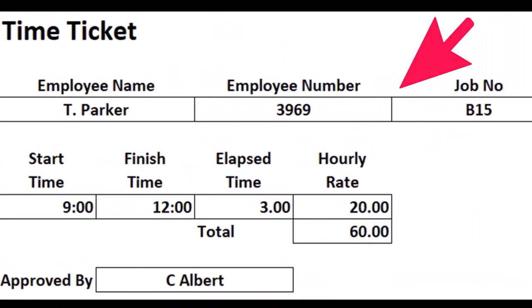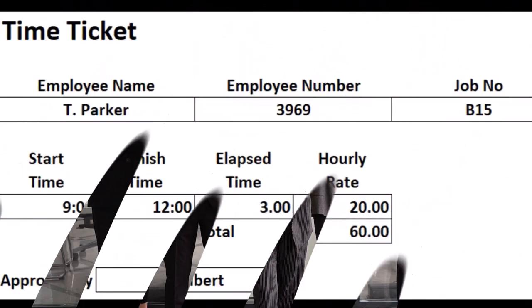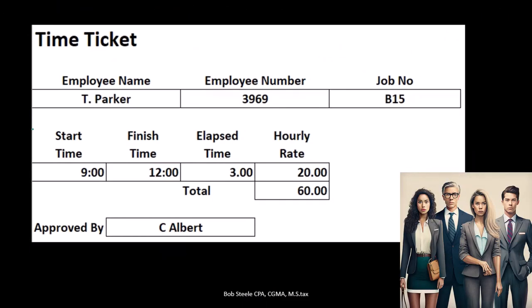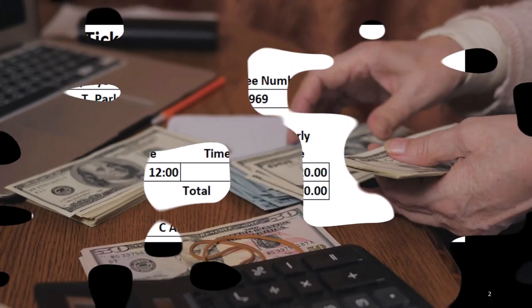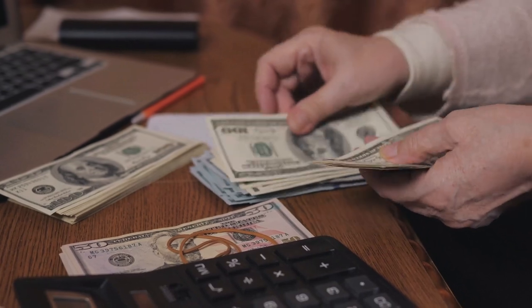Everything we're tracking here is the actual cost of the job. When we consider the time ticket, we're going to take the wages we pay any employee working on the job — which we usually record as wages expense — and apply them not to an expense but to work in process. We're tracking the time and applying it not as a period expense but to an asset, inventory, and we won't expense it until we sell the inventory in the form of cost of goods sold.